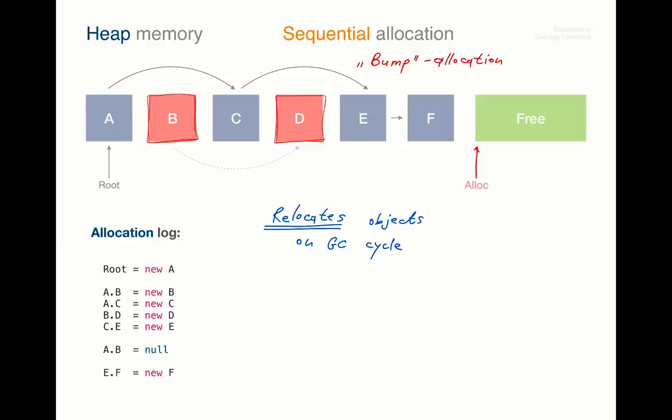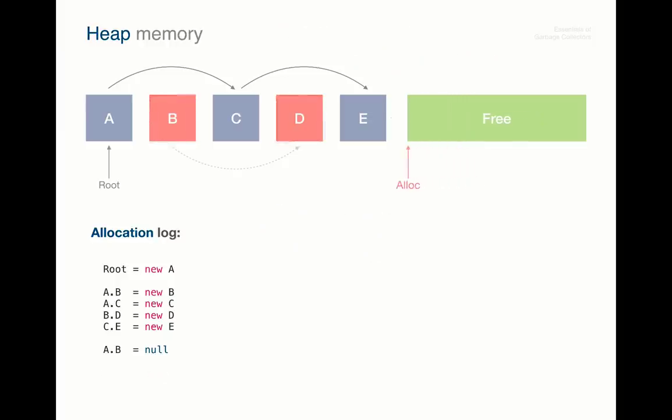However, as we said, systems which expose the pointer semantics, such as C or C++, cannot simply relocate the objects around and have to reuse previously freed blocks. So let's take a look at this example. So if we need to reuse the free blocks right away, we need to add them to what is known as the free list, that is the linked list of all available blocks on the heap.